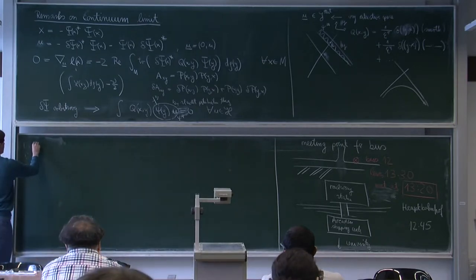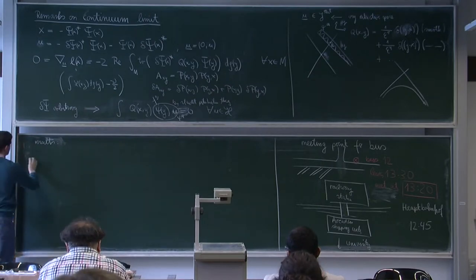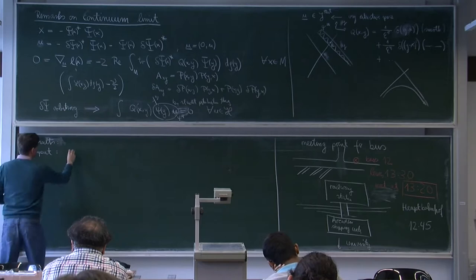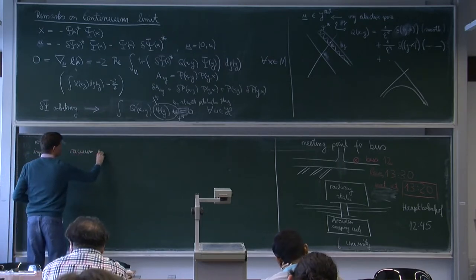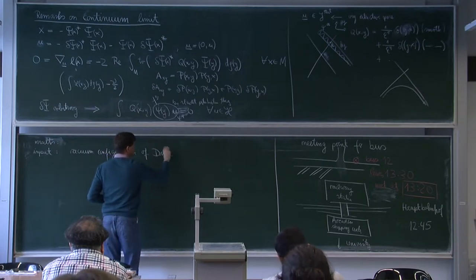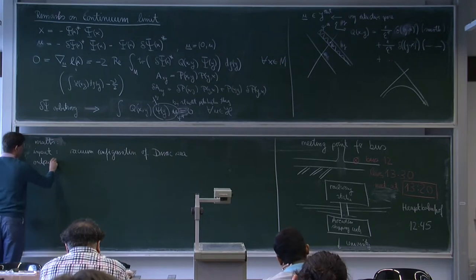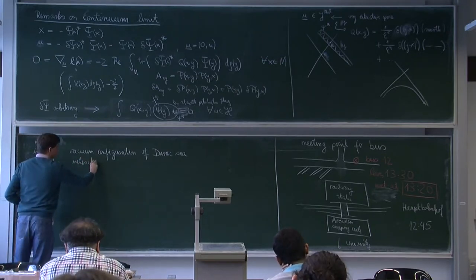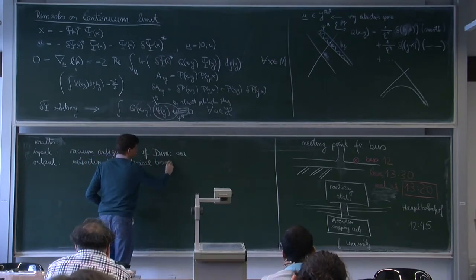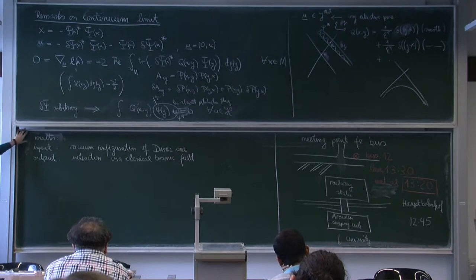Let me say a bit more on the results, and generally the strategy: what do we put in, what do we get out? The input is always specifying how the vacuum is described — the vacuum configuration of Dirac seas. The output is always the interaction, and I should say in the continuum limit, via classical bosonic fields. This is really not quantum field theory at this stage; we'll come to quantum field theory tomorrow and on Friday.